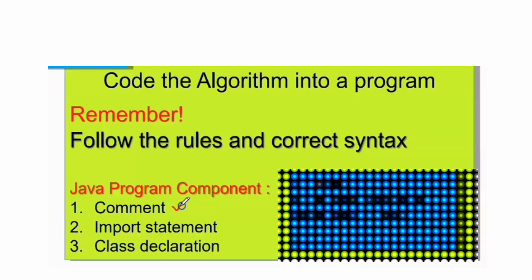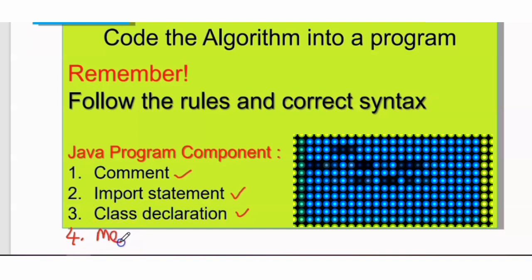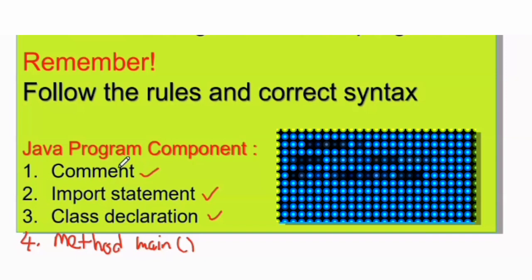The four main components are: first, comment; second, import statement; third, class declaration; and fourth, method. A comment is one way of creating documentation as part of a program — it provides information about the program. Comments are used to explain Java code, such as describing the purpose of a program, making it more readable and easier for other programmers to understand.